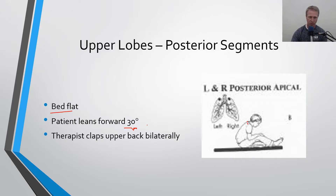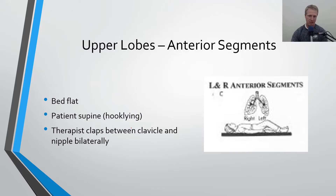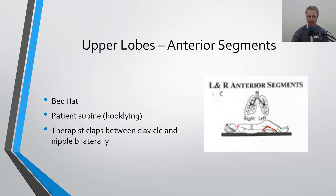For the upper lobes anterior segments, this is on the anterior portion of the chest. The patient is lying supine in a hook-lying position, so you'll place a pillow under their knees for comfort. Have them flat and then clap between the clavicle and the nipple area — a little bit higher up on the chest — to get drainage out of the upper lobes anterior segments.